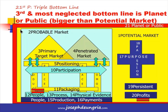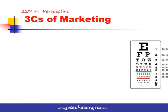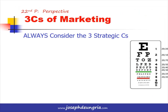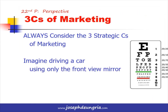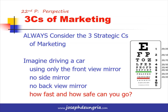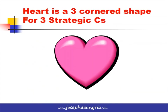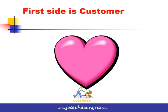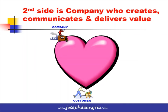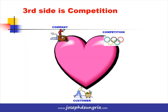Having all 21 Ps, we need to put this into perspective by including the strategic 3Cs of marketing. Imagine driving a car using only the front-view mirror and not the side mirror or rear-view mirror — that's the same as using only one or two of the three strategic Cs. The three strategic Cs are: the Customer, the Company — who creates, communicates, and delivers value — and Competition.